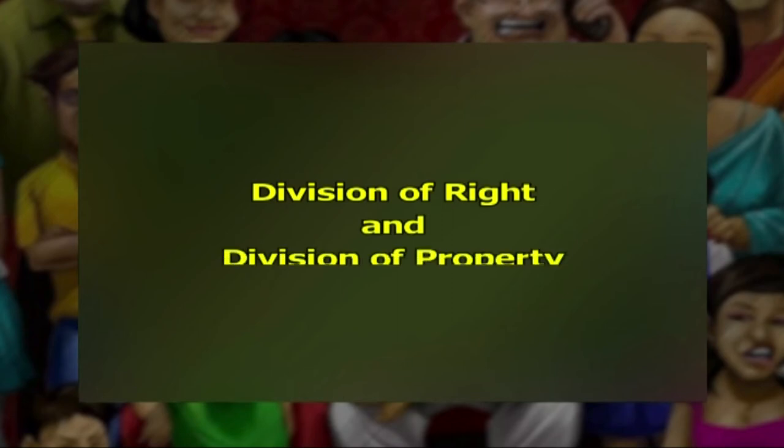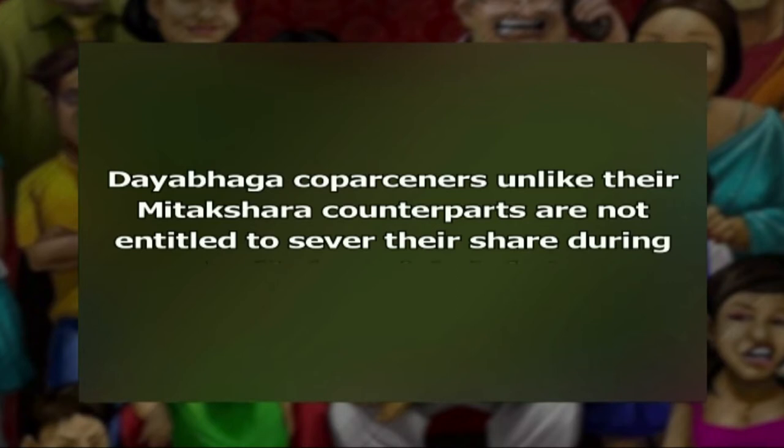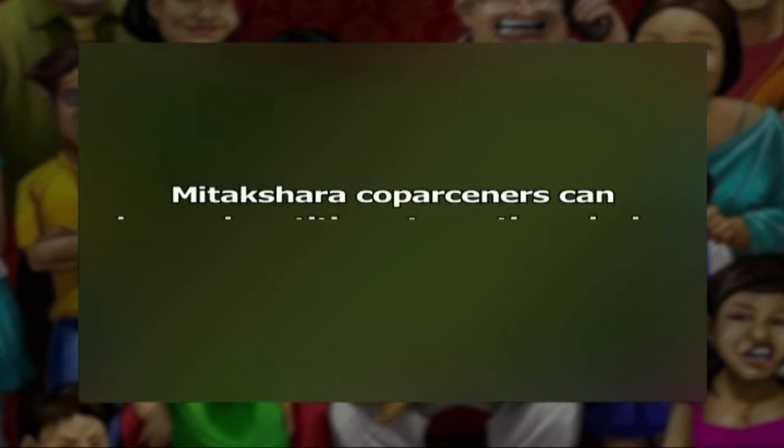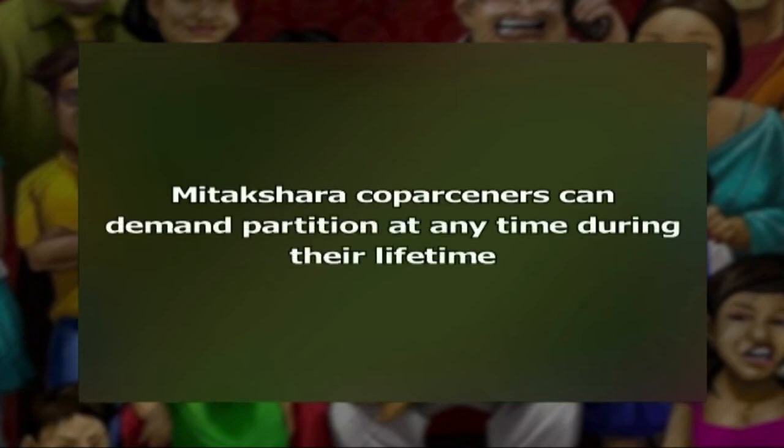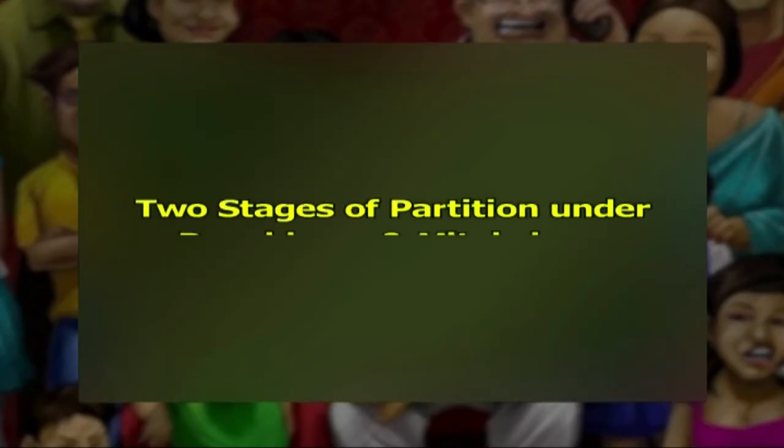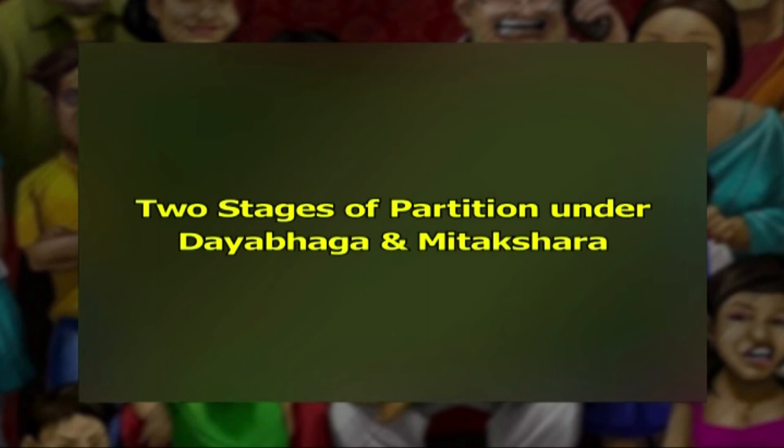Division of right and division of property. A joint family may or may not have joint property, but a co-parsenery cannot exist without joint property. Dayabhaga co-parseners, unlike their Mitakshara counterparts, are not entitled to sever their share during the lifetime of their father, whereas Mitakshara co-parseners can demand partition at any time during their lifetime. Under both schools, partition once demanded by any co-parsener results in severance of the joint status of the Hindu family immediately. The process of partition includes two stages.